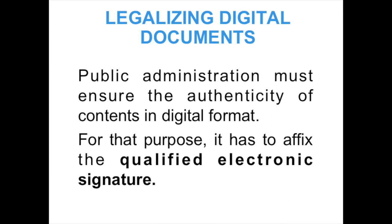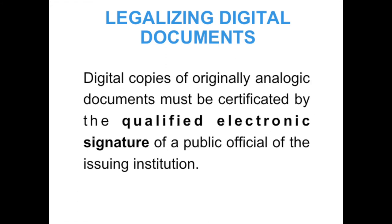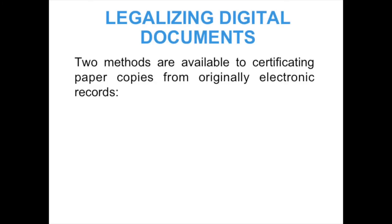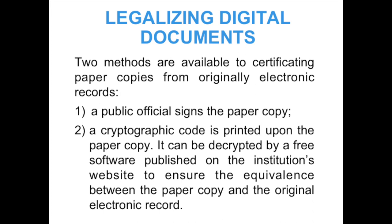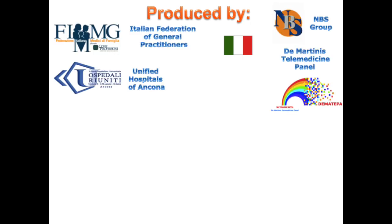Public administration must ensure the authenticity of contents in digital format. For that purpose, it has to affix the qualified electronic signature. Digital copies of originally analogic documents must be certificated by the qualified electronic signature of the public official of the issuing institution. Two methods are available to certify paper copies from originally electronic records: one, a public official signs the paper copy; two, a cryptographic code is printed upon the paper copy, which can be decrypted by free software published on the institution's website, to ensure the equivalence between the paper copy and the original electronic record.